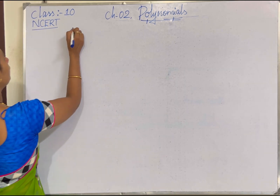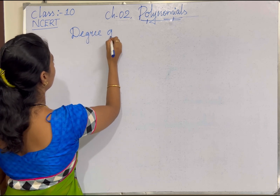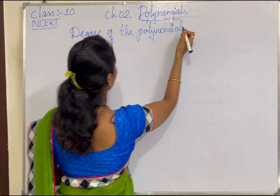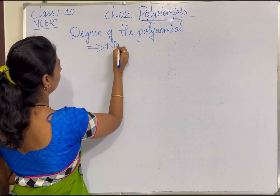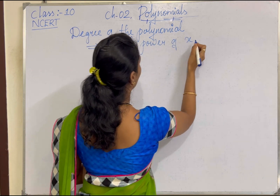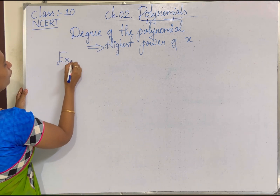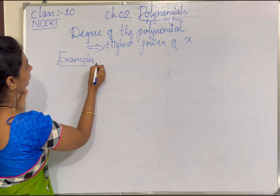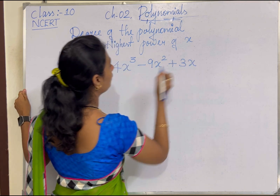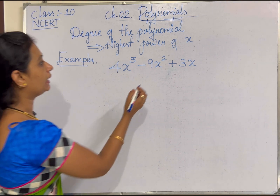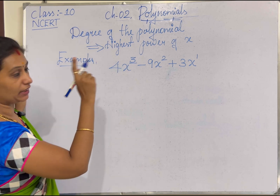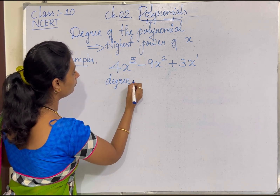The next topic is about the degree of the polynomial. It is nothing but the highest power of x in the given polynomial expression. For example, 4x³ - 9x² + 3x is a polynomial expression with variable x. We have x¹, x², and x³. The highest power of x is called the degree of the polynomial. Here, the degree of the polynomial is 3.